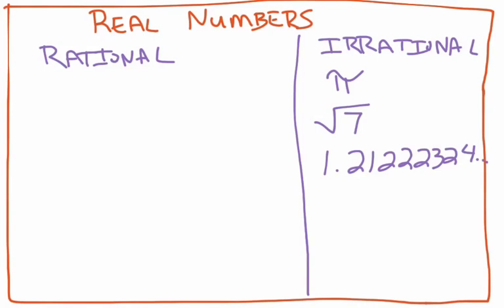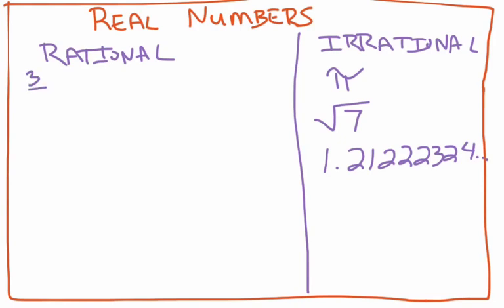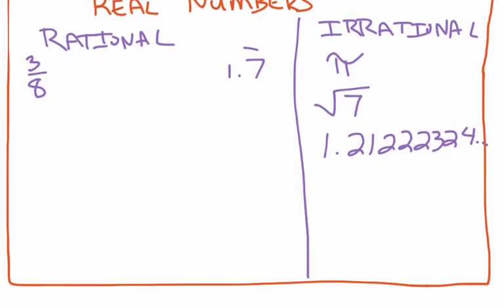Looking back at rational numbers — rational numbers are anything that can be written as a fraction. So things like 3/8, 1.7 repeating, or 4.5 are all examples of rational numbers. There are other numbers that are rational but are more specific in how we classify them.